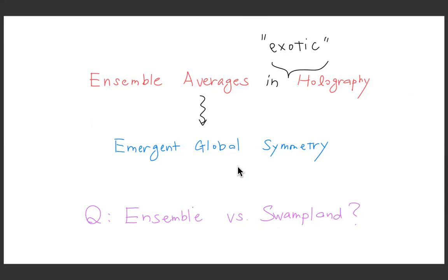What I'm going to discuss, summarized in one slide, is the issue of ensemble averages and holography. Of course, there are a lot of discussions about ensemble averages these days. But what I'm going to discuss is a little bit exotic theory of holography. Partly related with that, there is going to be a global symmetry in the bulk after ensemble average. So it's a symmetry after ensemble average — I call it an emergent global symmetry. And then there seems to be some structures which are highly reminiscent of the Swampland program.